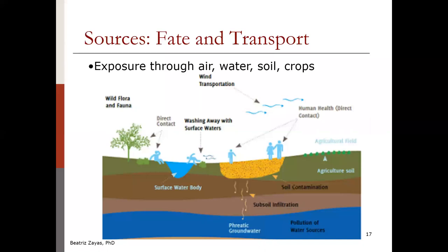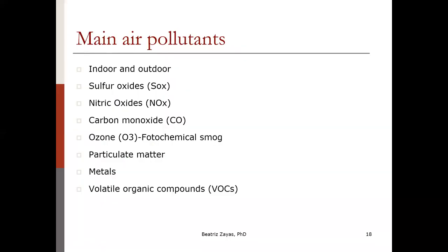There are many contaminants of interest, but I want to mention criteria air pollutants — contaminants found all over the United States and other places around the globe. They can harm human health, affect the environment, and cause property damage. The main criteria air pollutants are sulfur oxides, nitric oxide, carbon monoxide, ozone, particulate matter in different sizes, metals, and volatile organic compounds.